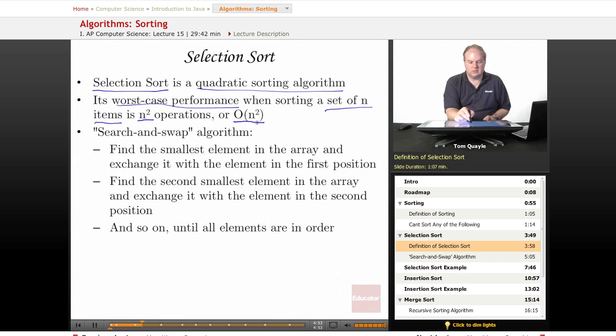Generally your quadratic sorts, or your order n squared sorts, are going to be your least efficient sorting algorithms, but on the other hand probably the simplest to implement.